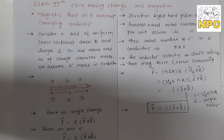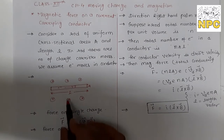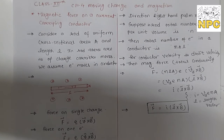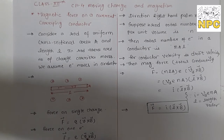If you have only one electron, then what will be the force? Force F is equal to charge of electron e and V cross B. Here, we will use V_D at the place of V — the drift velocity.